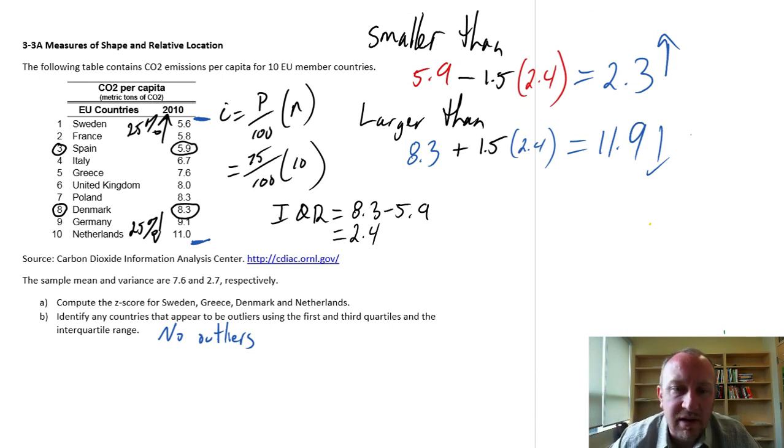Okay. That was a little bit longer than I intended it to be, but we got through everything. So I hope that helps identify z-scores, relative position, as well as identifying outliers using the interquartile range method. Okay. Thanks for watching.